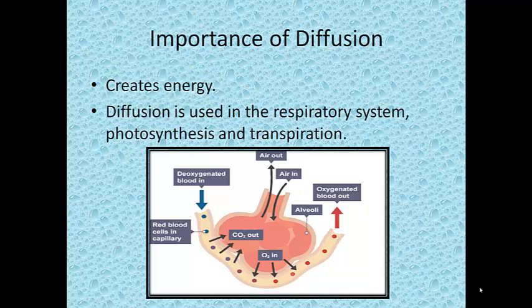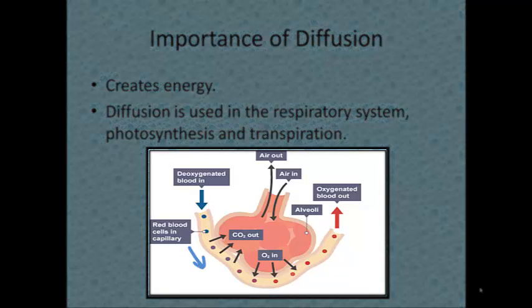A very simple example of diffusion when it's giving energy is in the respiratory system. The venous blood, which has a low concentration of oxygen, passes through the alveoli, which has a high concentration of oxygen. Their diffusion occurs and allows the oxygen to pass through the membrane into the blood cell.